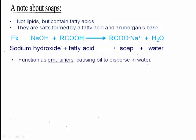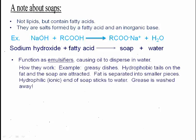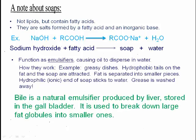Soaps are emulsifiers — they cause oil to disperse in water. With greasy dishes, the hydrophobic tails of the soap are attracted to the fat, while the hydrophilic sodium end is attracted to water due to its polarity. As water is washed away, the soap holds onto both the water and the fat, washing the grease away. In our bodies, we have bile — a natural emulsifier produced by the liver and stored in the gallbladder — which breaks large fat globules into smaller ones. This is a physical, not chemical, change, but it creates more surface area for digestive enzymes to break fat down into its components for energy.